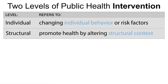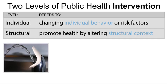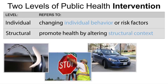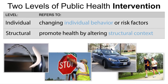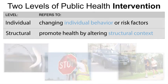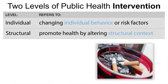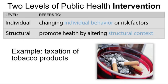Structural interventions focus on changing physical, social, and or economic factors in the environment to improve public health. Provision of clean drinking water, improving road safety standards, changes in car designs, or changes in urban design to increase physical activity are examples of structural interventions. In contrast to an individual intervention, a structural intervention to prevent smoking might promote taxation of tobacco products to make them less affordable. Structural interventions rely on the assumption that public health problems have some social causation.